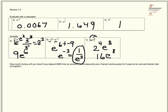And lastly, how much money will you have if you deposit $450 into an account that compounds your interest continuously for 5 years with the following interest rate? So continuously should make you think e. And y equals pe to the rt is your continuous compounding formula.